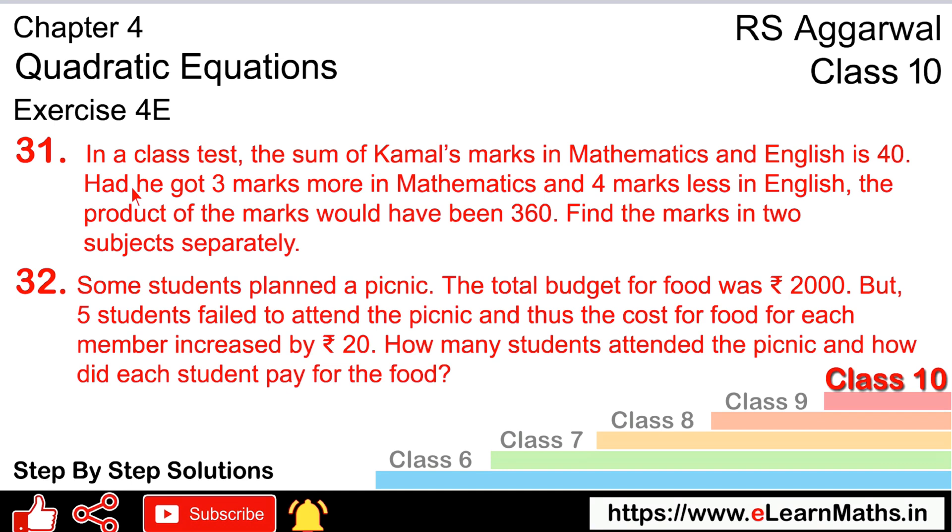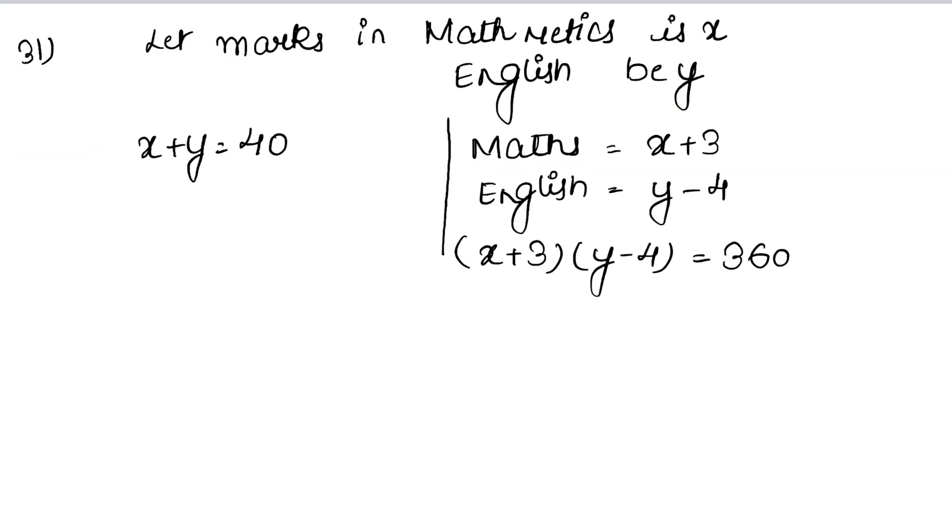From the first equation, y equals 40 minus x. We will substitute this value of y into the second equation: x plus 3 multiplied by 40 minus x minus 4 equals 360.